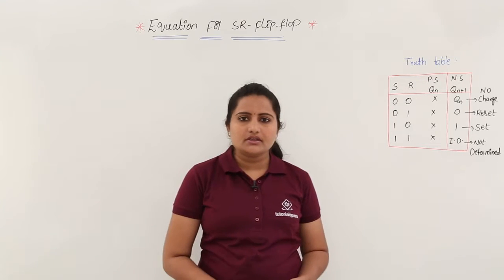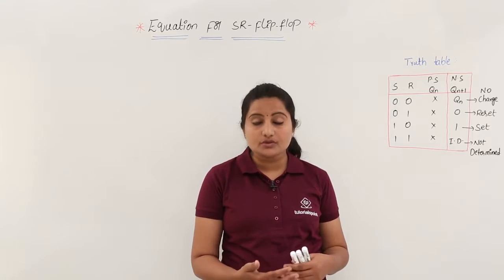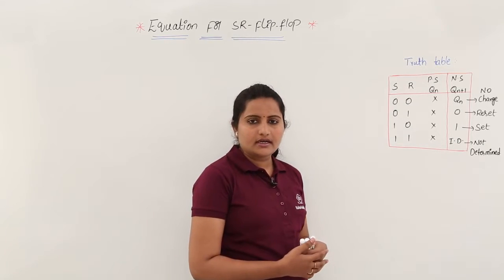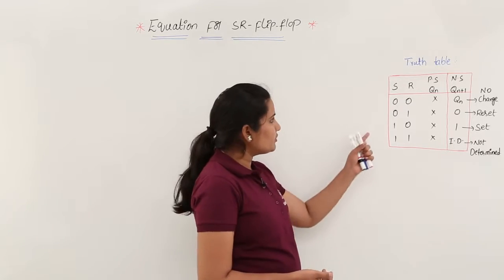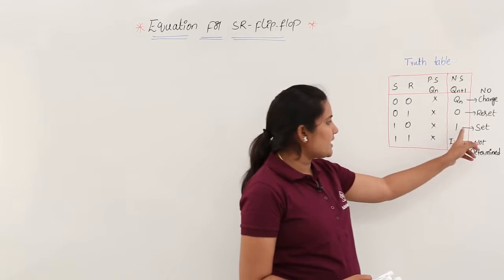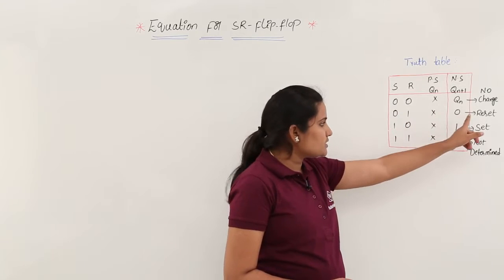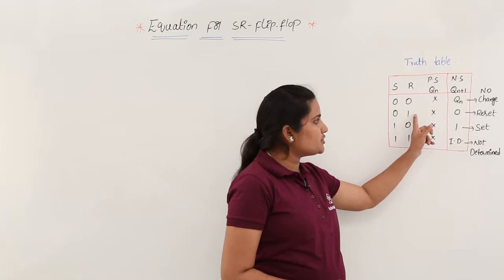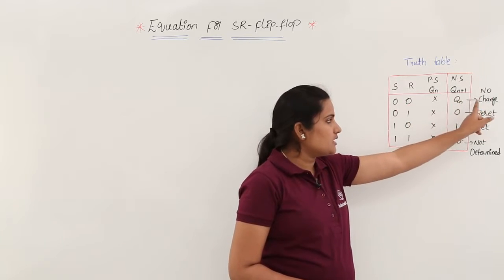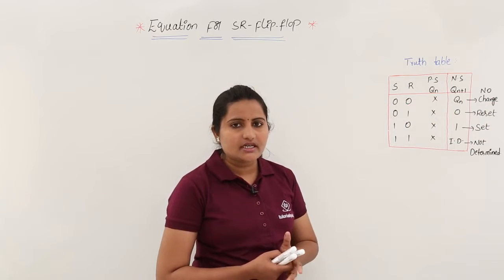Generally, your expression for SR flip-flop can be defined by using a truth table. Using data from previous classes, you know about the truth table of SR flip-flop. It is going to set when 1,0 is given at SR input, and it is going to reset when we give 0,1. When you give 0,0, it is a no-change condition. When you give 1,1, an indeterminate state occurs.